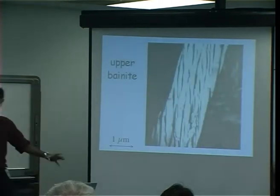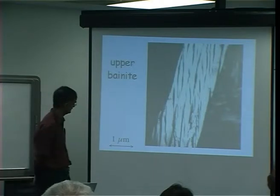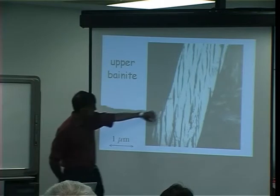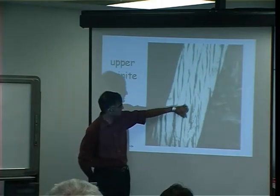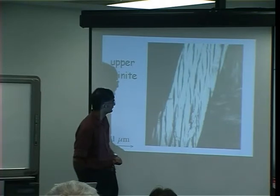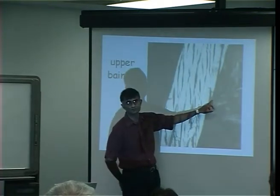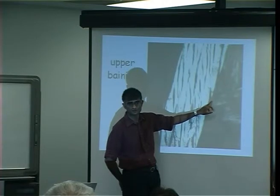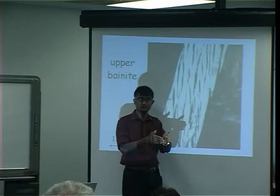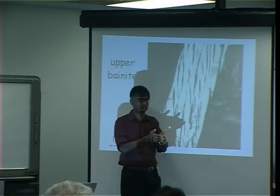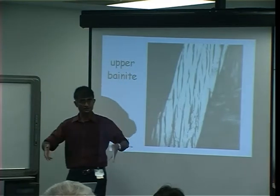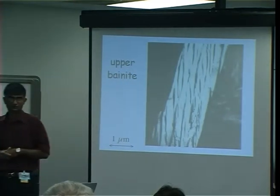This is what upper bainite looks like in a transmission electron micrograph. The scale is one micrometer, so these plate lengths of ferrite are of the order of a quarter of a micrometer. Notice they have very sharp tips — this is another characteristic of a displacive transformation because it minimizes the strain energy to have a thin plate. These are the cementite particles that we get between the plates of ferrite.